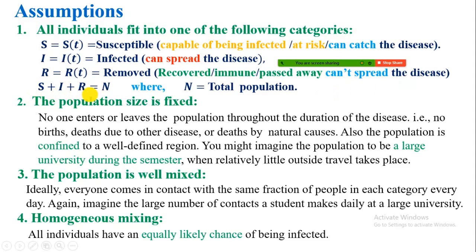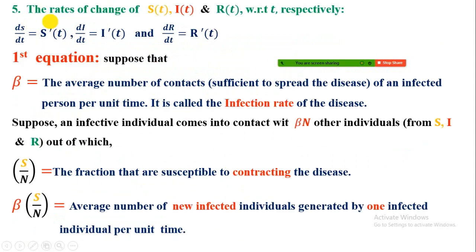S plus I plus R equals N. The second assumption is that the population is fixed. The third is that the population is well mixed. The fourth is homogeneous mixing, meaning all individuals have an equally likely chance of being infected. The fifth assumption is that the rates of change of S, I, and R with respect to t are represented by their respective derivatives dS/dt, dI/dt, and dR/dt.